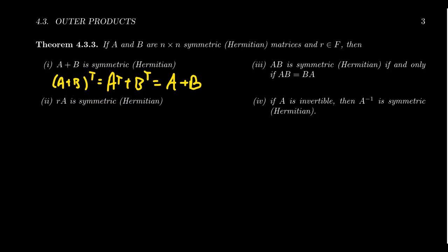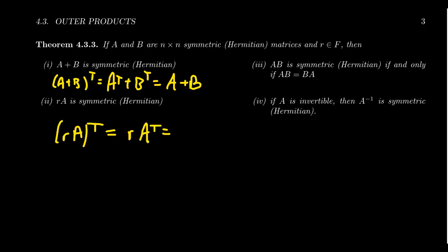If you take a scalar multiple r times A, that likewise will be symmetric if A was originally symmetric — a similar statement holds for Hermitian matrices. The reason is that (rA) transpose equals r times A transpose. If A is symmetric, A transpose is A, and therefore (rA) transpose equals rA. So because the transpose map is linear, the sum of symmetric matrices is symmetric and the scalar multiple of a symmetric matrix is symmetric.